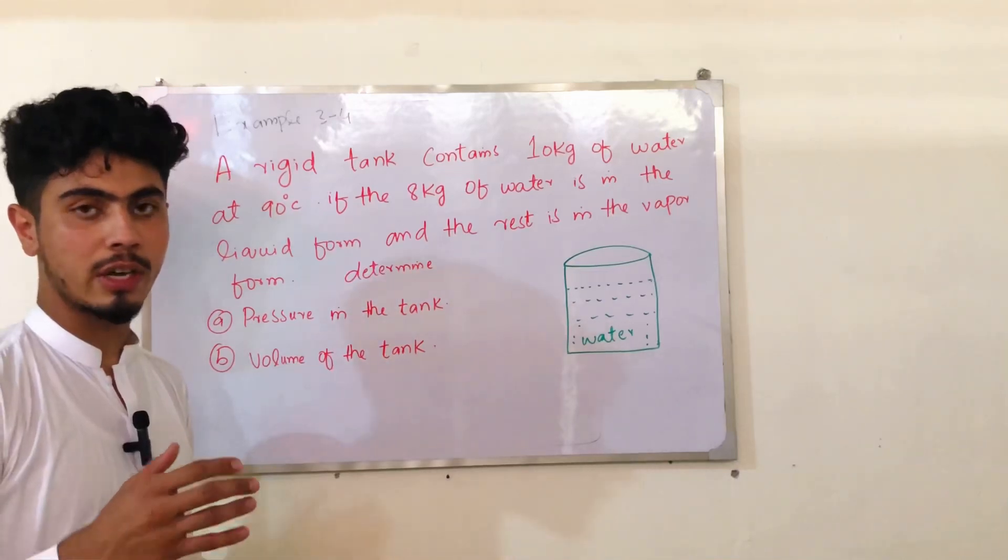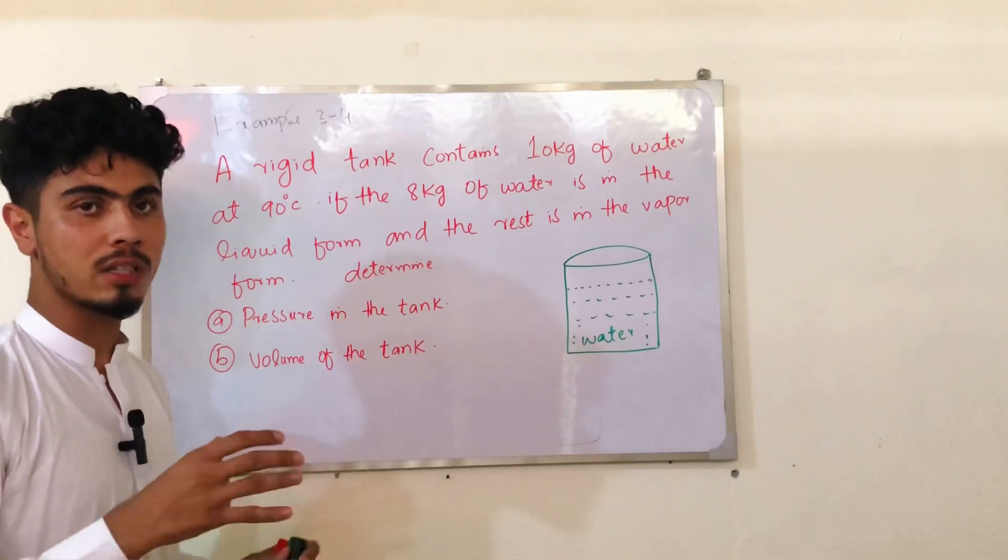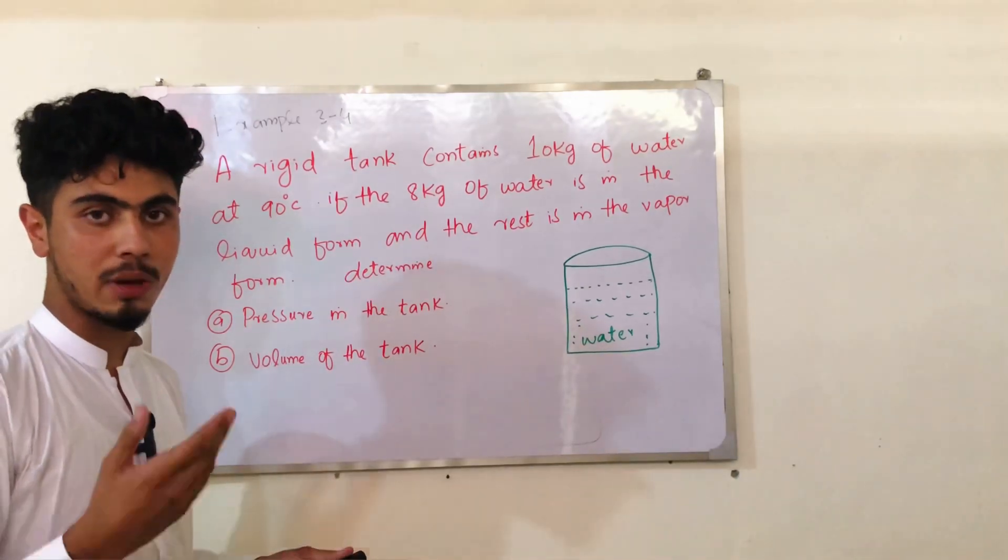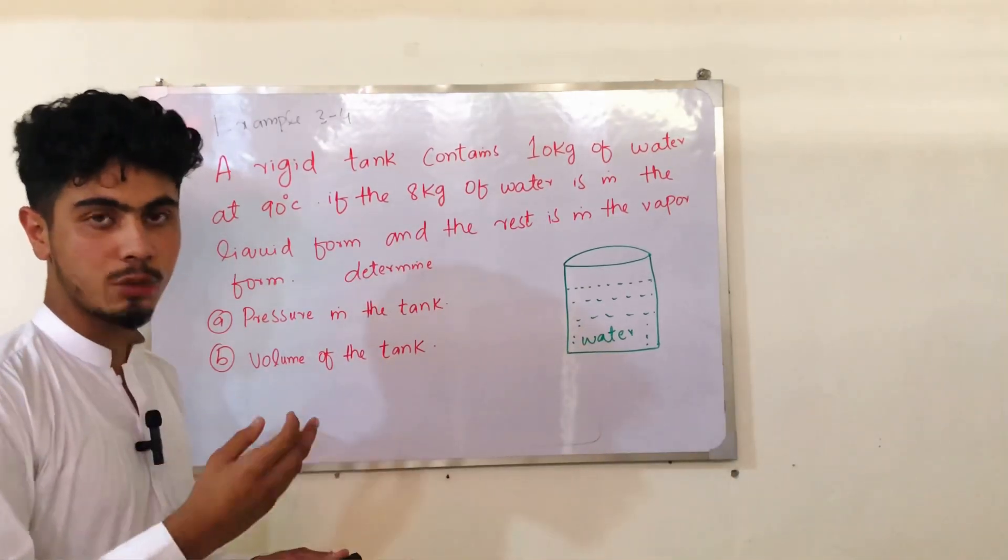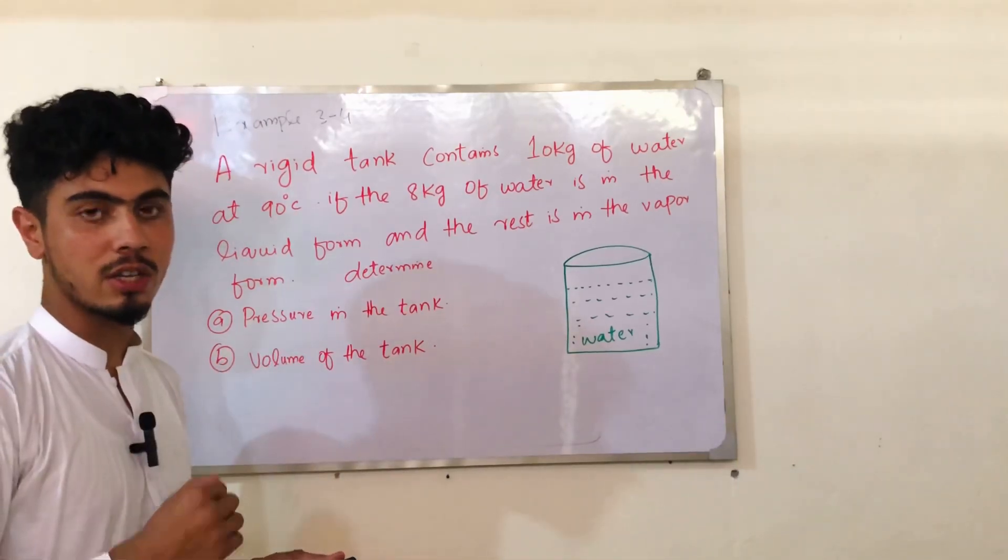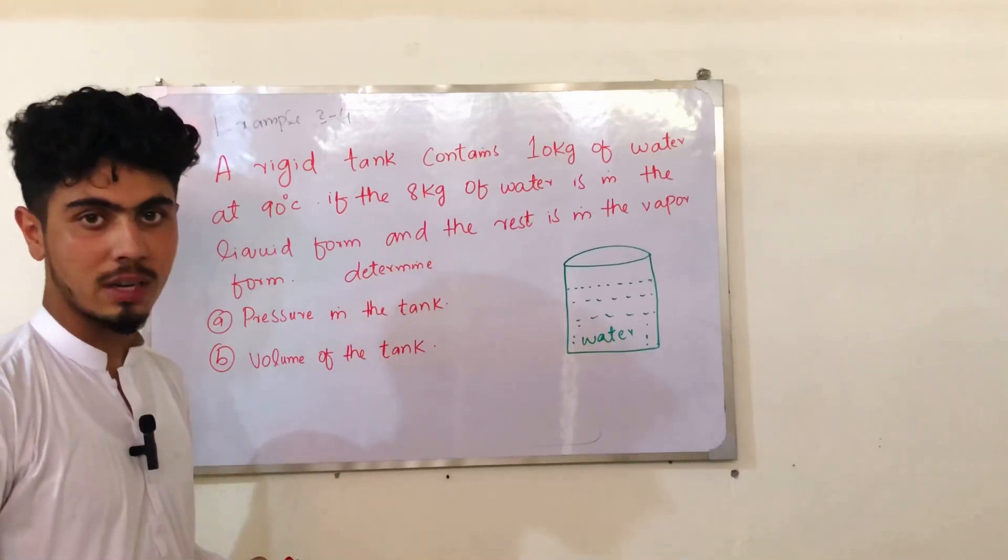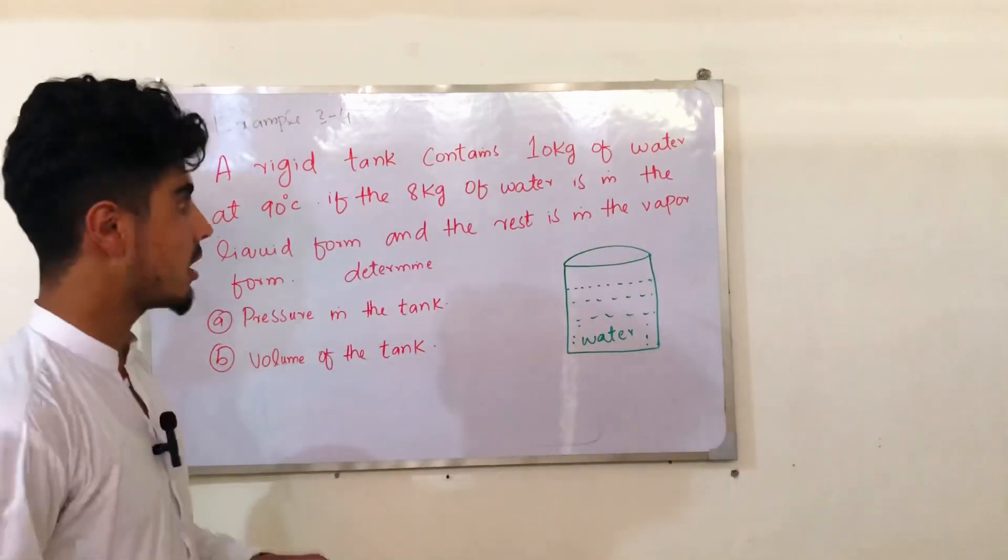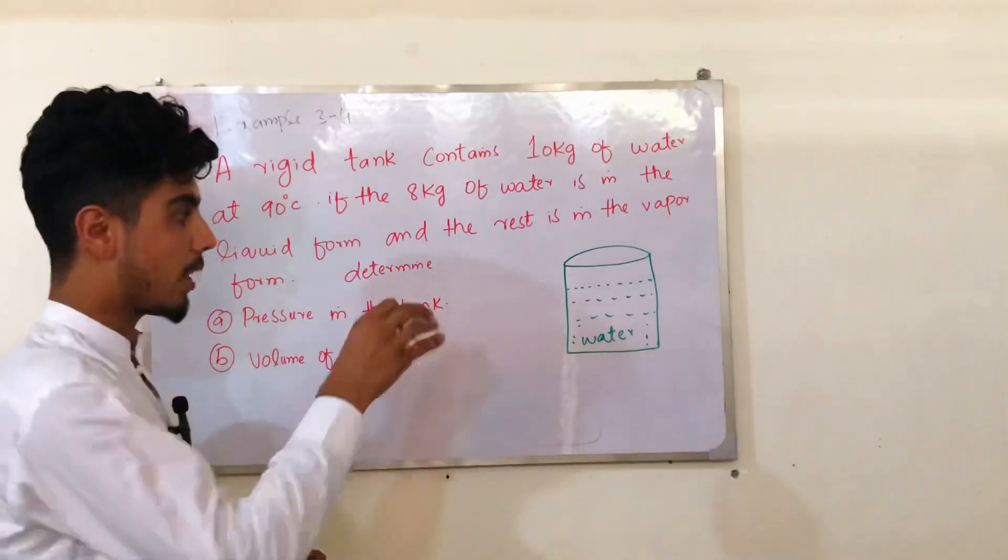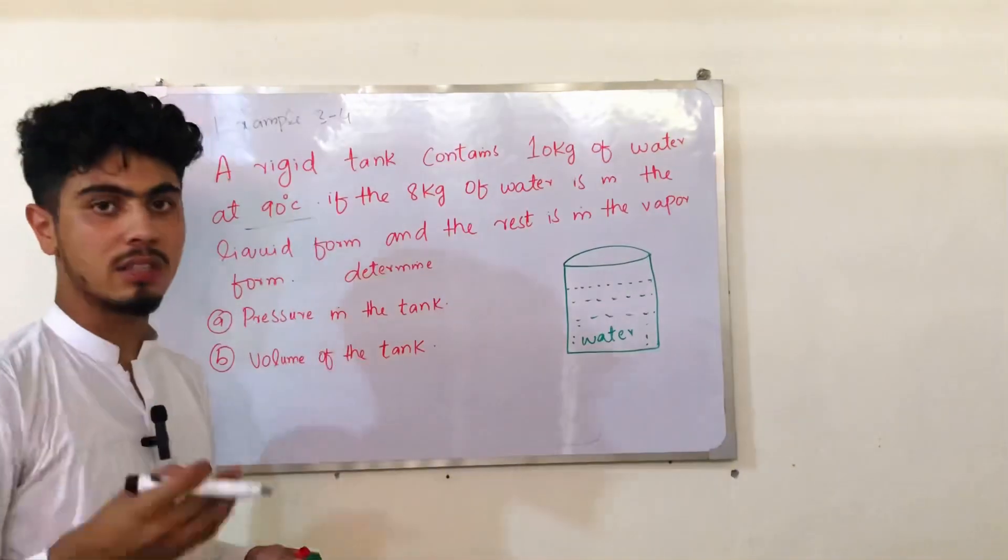A rigid tank contains 10 kg of water. The key point is that a rigid tank has constant volume. Pressure can change and heat transfer occurs, but no work is done. The rigid tank volume remains constant throughout the process.